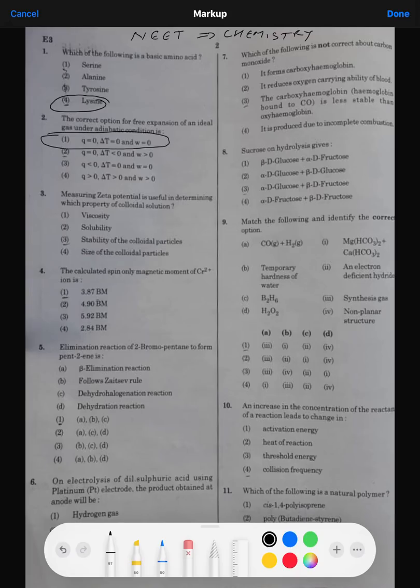Question number three: measuring zeta potential is useful for determining which property of colloidal solution. Of course it is used for the determination of stability of colloidal particles. When colloidal solution undergoes adsorption, positive or negative charge is adsorbed, then it has a mobile layer which will be opposite charge. This layer is fixed layer and this is mobile layer. The difference is zeta potential, and it increases the stability of colloidal solution. So the answer should be three.